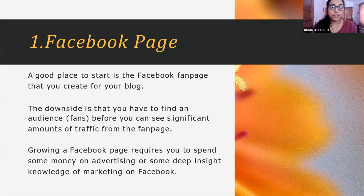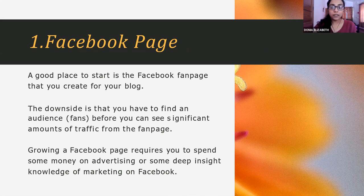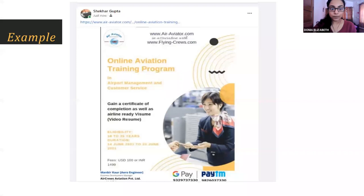Talking about the different ways, the first one would be a very familiar way for all of us, which is a Facebook page. A Facebook page can be created for your blog, and the good thing about this is that you can find a lot of audience and it will generate a lot of traffic. But the problem is identifying your target segments because this is a mass marketing tool. This is one example where we published the event on a Facebook page.